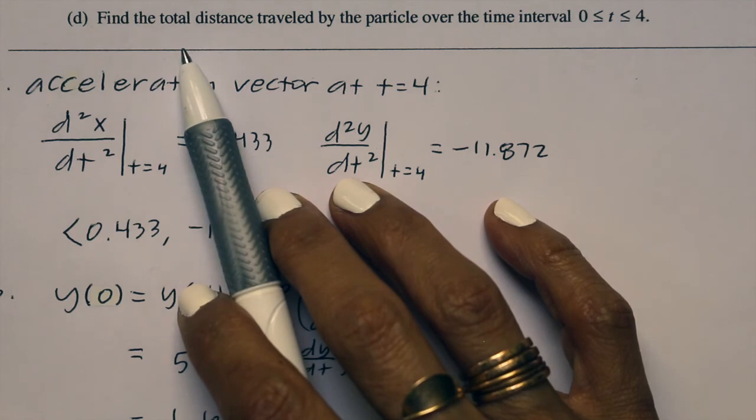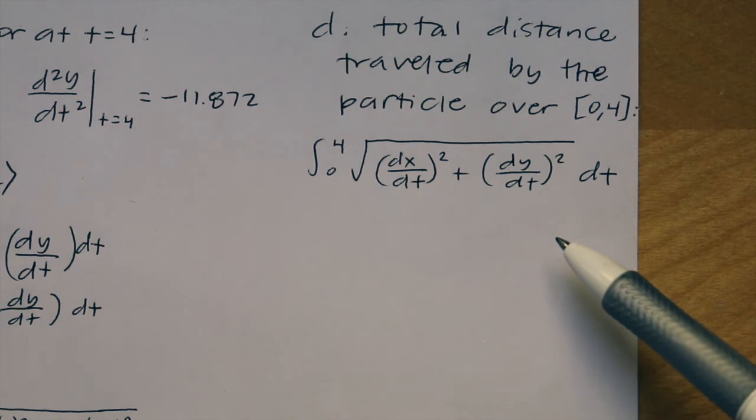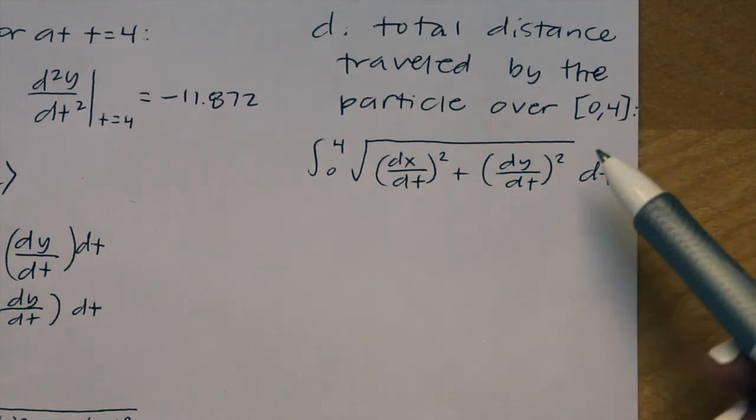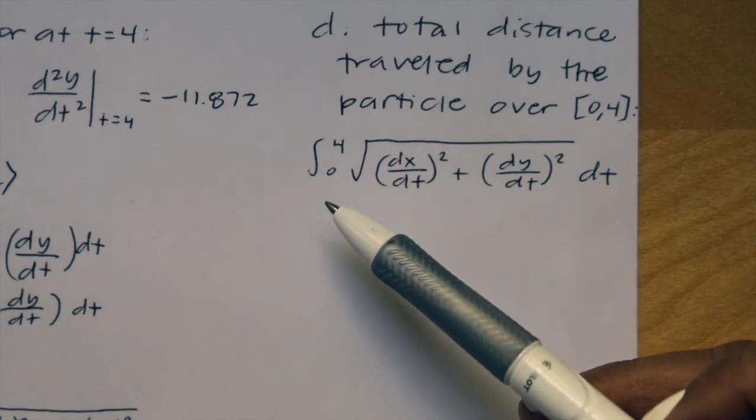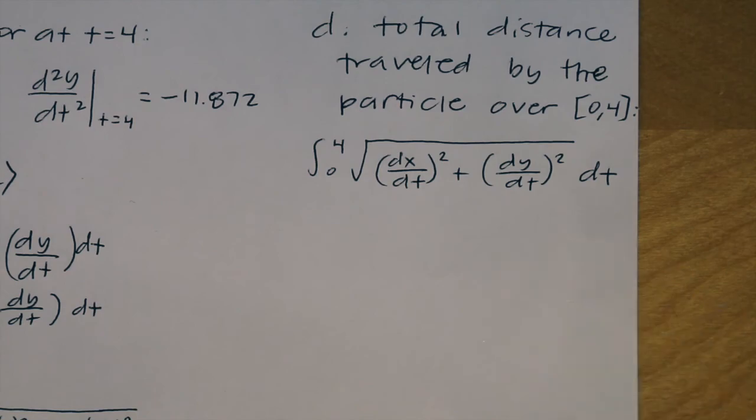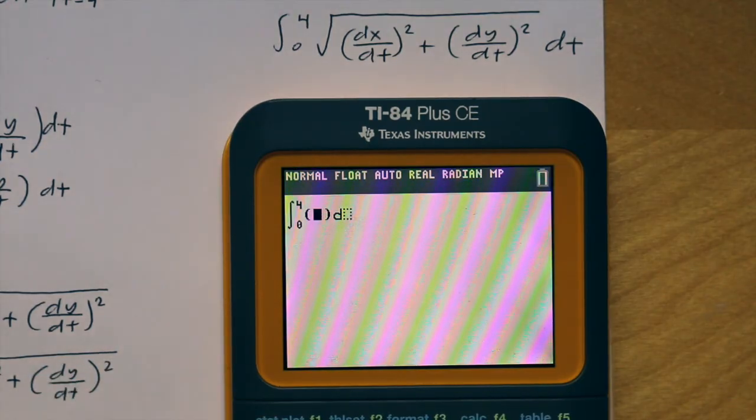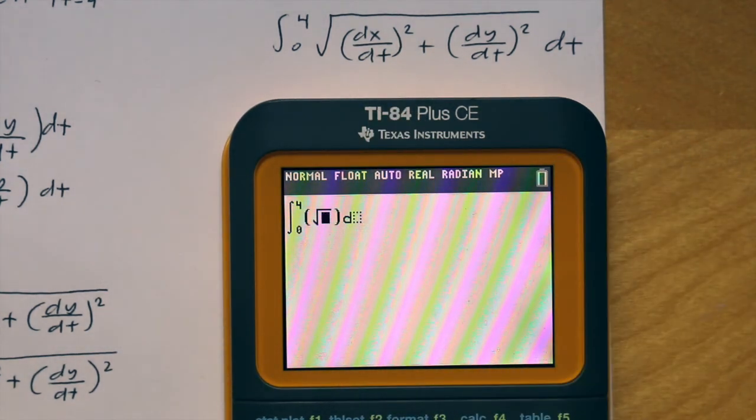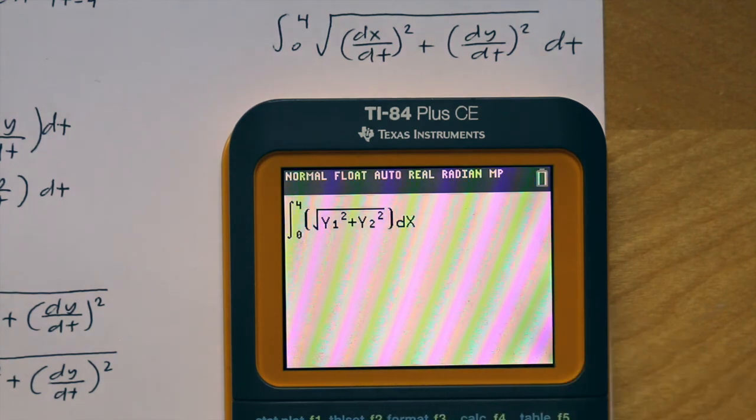Part D says find the total distance traveled by the particle over the time interval from 0 to 4. To find the total distance traveled over the closed interval from 0 to 4, we're using the length formula for parametric equations. It's the integral from 0 to 4 of the square root of dx/dt squared plus dy/dt squared dt. We're going to plug this into the calculator. Math 9, 0 to 4, square root, dx/dt is our y1 and y2, both are squared, and we get 13.182.